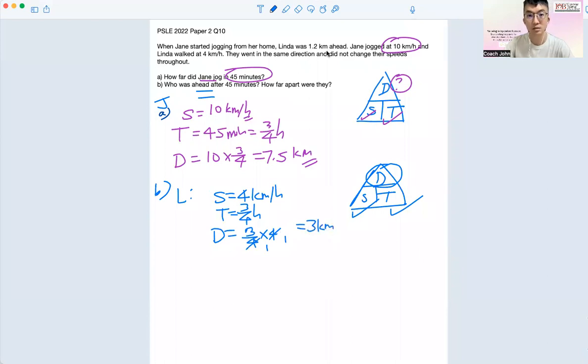Yeah, but at the same time, she's already 1.2 km ahead. So the actual distance after 45 minutes will be 3 plus 1.2. Make sure that both are in km, and that's 4.2 km.